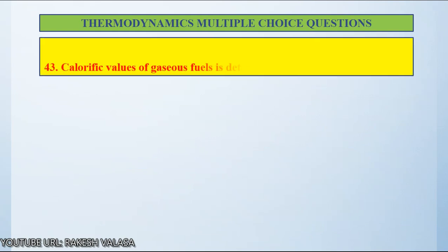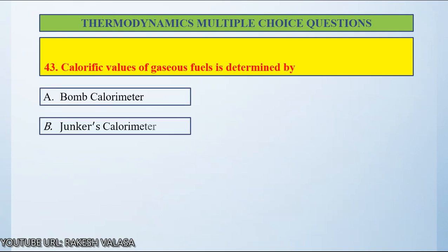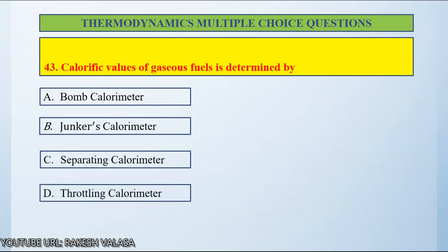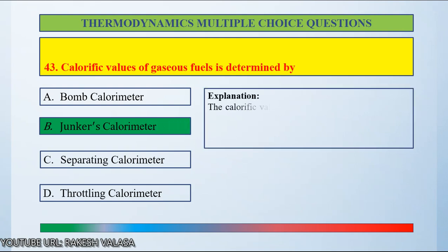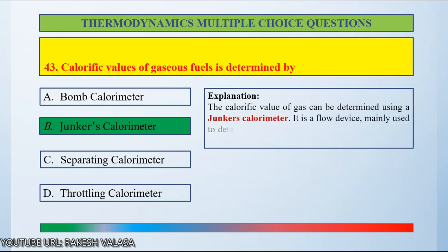Question number 43: Calorific values of gaseous fuels is determined by — Option A: Bomb calorimeter, Option B: Junkers calorimeter, Option C: Separating calorimeter, Option D: Throttling calorimeter. The answer is Junkers calorimeter. It is a flow device mainly used to determine the heat of combustion and the calorific value of gaseous fuels.